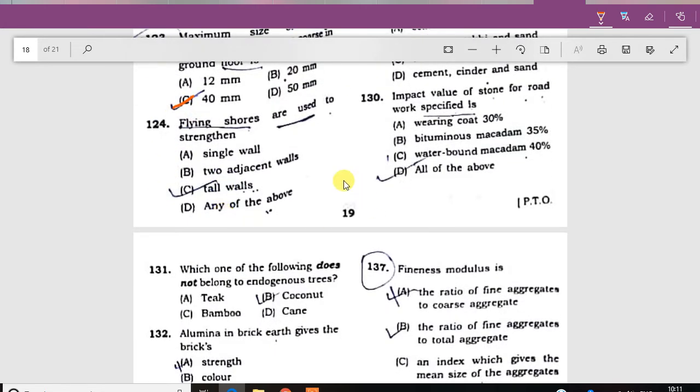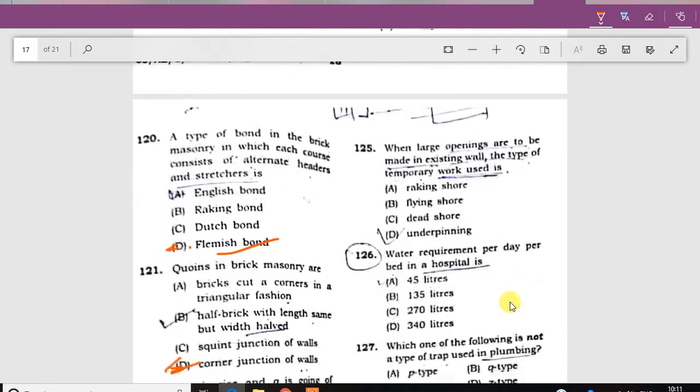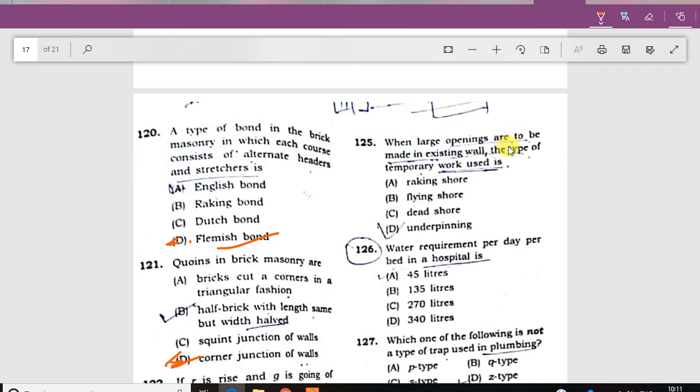Flying shores are used for strengthening two adjacent walls. When large openings are to be made in existing walls, the type of temporary work used is the dead shore.